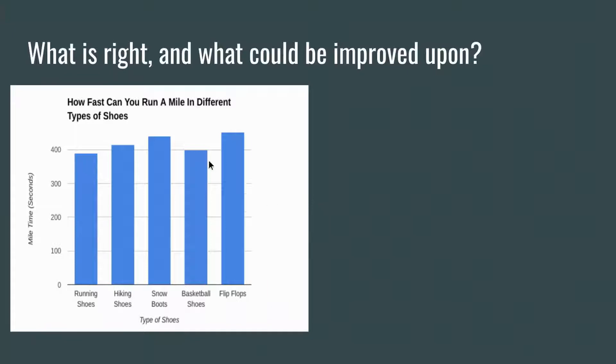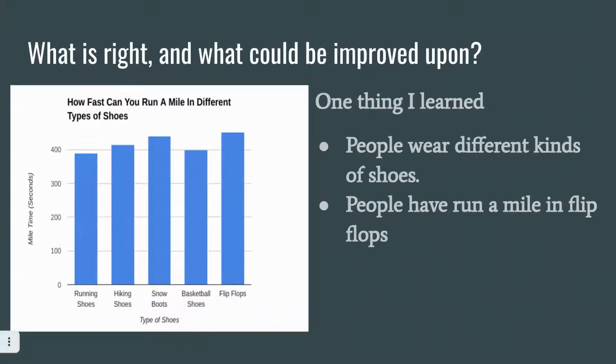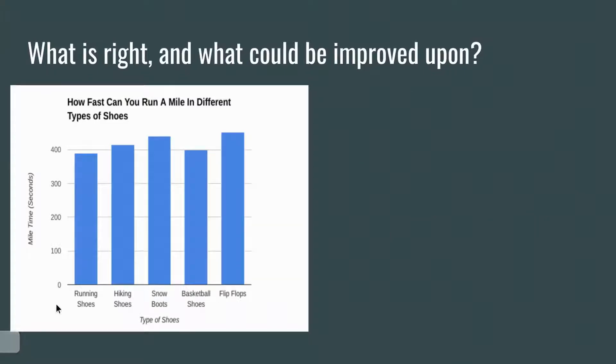So this first graph, the title up here states how fast can you run a mile in different shoes. The independent variable on the x-axis is the type of shoes. So the experimenter is putting people in different types of shoes on purpose. The dependent variable is their time, how long it takes them to run a mile. So how long it takes to run a mile depends on the type of shoe a person is wearing.